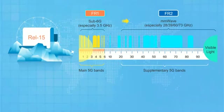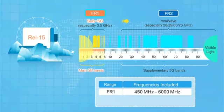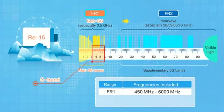FR1 is the band from 450 MHz to 6000 MHz. We call it the sub-6 GHz band, or sometimes the low frequency band. It is the main band used by 5G. The frequencies below 3 GHz are called sub-3 GHz, and all remaining spectrum is referred to as C-band spectrum.